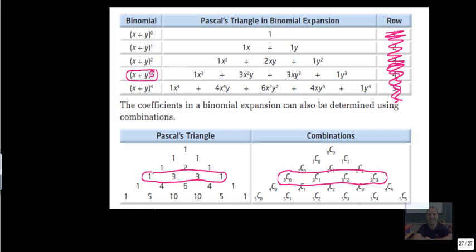If it's to the power of 3, you start with 3 in your combination here. 3 choose 0, then you do 3 choose 1, 3 choose 2, 3 choose 3. That's how you get the coefficients for that particular row of Pascal's triangle.